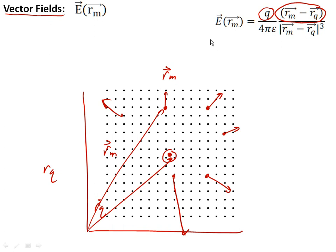A vector field is an equation, Coulomb's law, that maps a vector onto every single point of space.